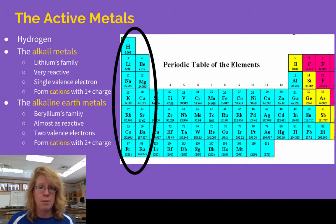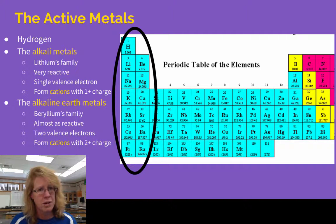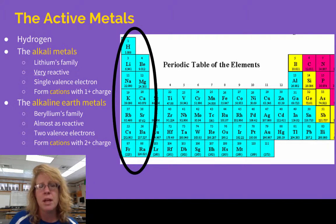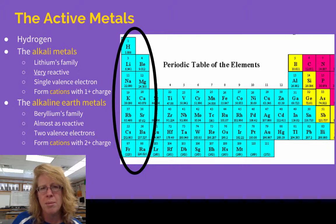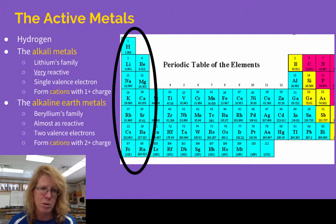The ones next to them — beryllium's family on down — are the alkaline earth metals. Kind of similar names, but they're slightly less reactive. They've got two additional electrons they want to get rid of, so they form a cation with a 2-plus charge. If you look down these two rows of active metals, you're probably not familiar with sodium, potassium, and calcium as metals — you've seen them in compounds in their ion forms, because they tend to be more stable as ions.